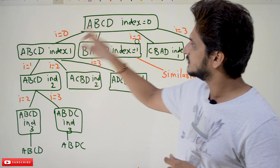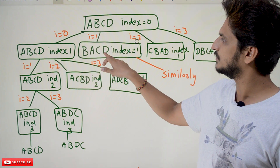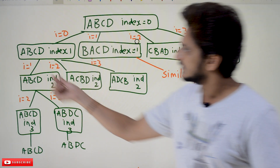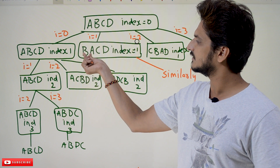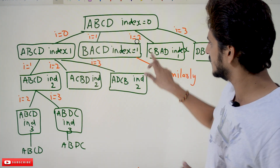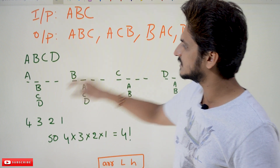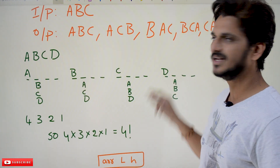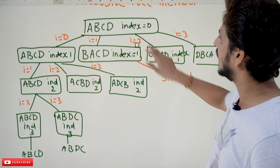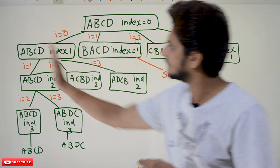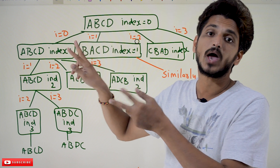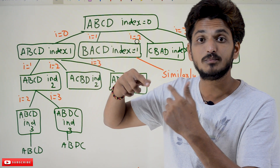Let's understand it. The first function takes input ABCD. The second function takes input BACD. The third function takes input CBAD. The fourth function takes input DBCA. What's the difference? The first position is A, then B, then C, then D. This is what we discussed above — what are the different possibilities in the first position? You can place A, B, C, or D. Based on the index value, what is the index position showing? The 0th position means the first position in the string. Based on the i value, we are swapping the characters and getting different possibilities.